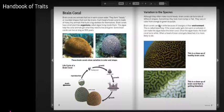Brain coral. Brain corals are animals that live in warm ocean water. They form heads or rounded shapes that look like brains.